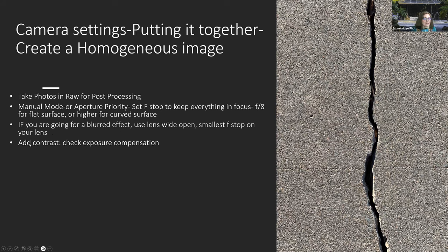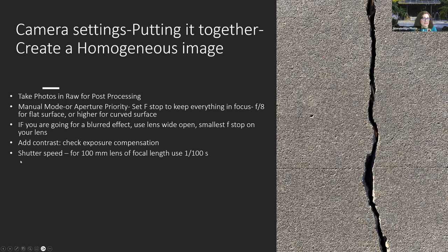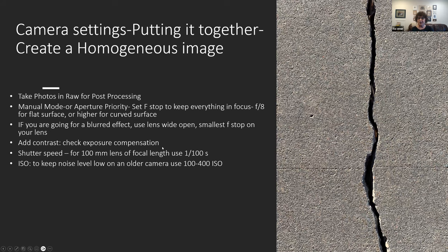Make sure you check your contrast and exposure compensation. Most cameras have exposure compensation — you can do minus or plus. If you've set your F-stop, ISO, and shutter speed, and you still need more or less light, you can use exposure compensation. It says to use a shutter speed matching your focal length — so for a 100mm lens, use 1/100th of a second. But when you're out seeing a texture, you're just going to take the picture.